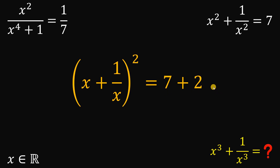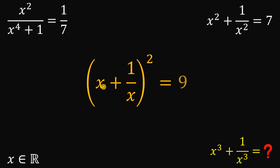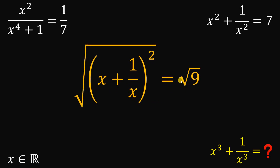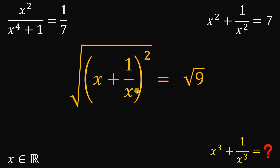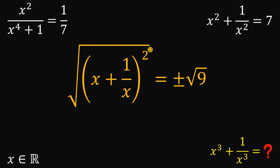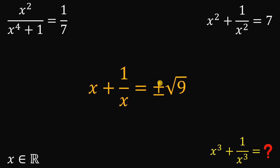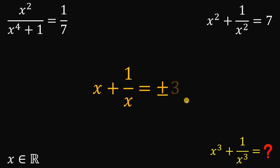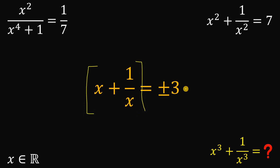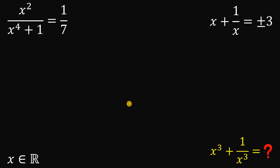Replacing x squared plus one over x squared with seven, we get x plus one over x, raised to the power of two, equal to seven plus two, which is nine. Taking the square root of both sides gives us x plus one over x equals positive or negative square root of nine, which is positive or negative three.